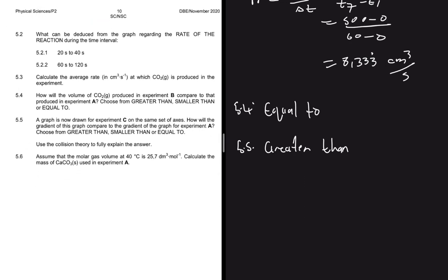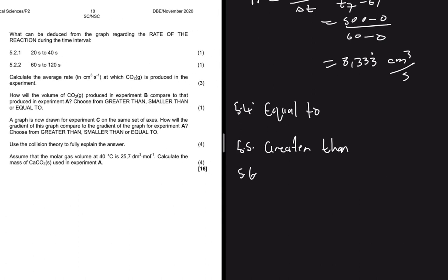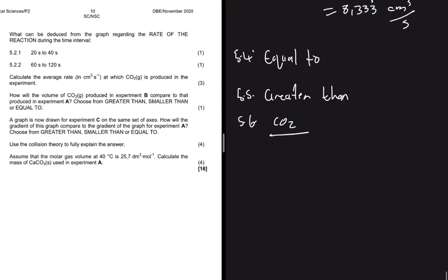Question 5.6: assuming the molar gas volume at 40°C is 25.7 dm³/mol, calculate the mass of CaCO₃ using experiment A. We have information about CO₂, so we first determine the number of moles of CO₂, then use the balancing coefficients to find the moles of calcium carbonate, and ultimately calculate the mass. The number of moles of CO₂ = volume / molar gas volume.